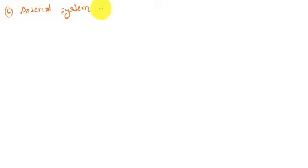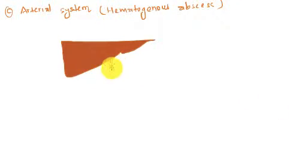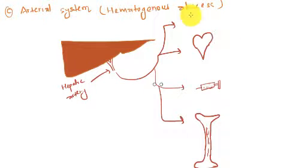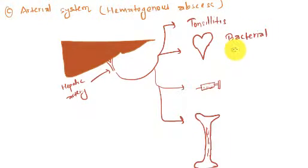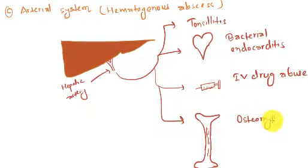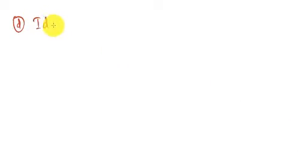The third cause is the arterial or hematogenous cause for abscesses. The reason for hematogenous cause is the hepatic artery. It can be due to tonsillitis, bacterial endocarditis, IV drug abuse, and osteomyelitis.